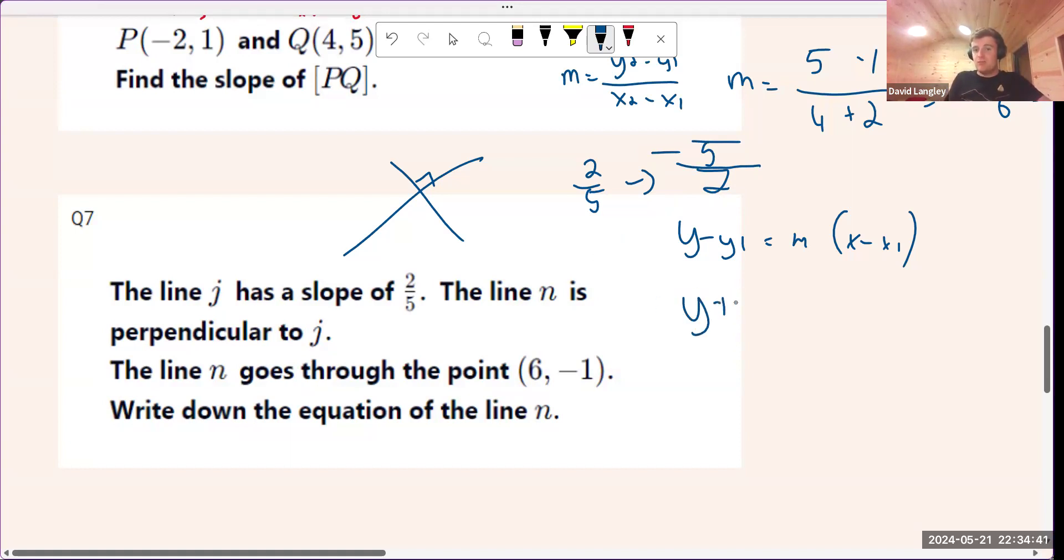So we're going to have y plus 1, minus minus 1, equals minus 5 over 2 times x minus 6. I'm going to multiply by 2 to get rid of the fraction.